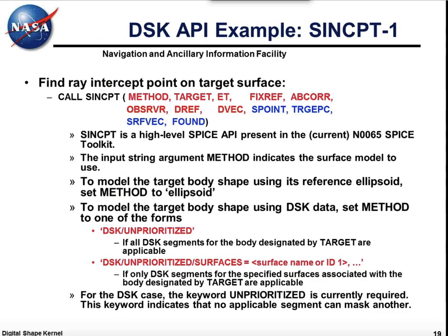Here's an example of how Syncept would be used to find a ray-surface intercept with a shape model. We see the same arguments that were present — we don't change our interfaces except by augmenting them. But now we can supply the arguments DSK/unprioritized or DSK unprioritized surfaces equals, etc., to specify a search with DSK data, possibly using multiple surfaces.